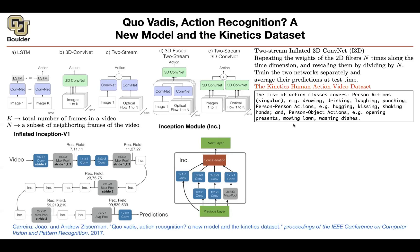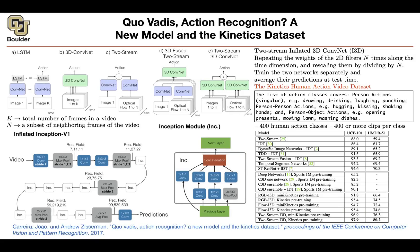There are 400 human action classes in total, with 400 or more clips per class. Multiply those two numbers together and that's how many clips you have in the dataset.